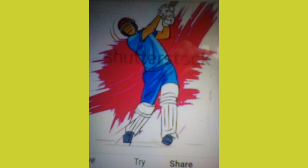11. LBW: LBW stands for leg before wicket. A batsman is declared out LBW when he tries to play the ball with his body that is directly on the stumps.